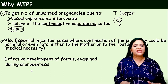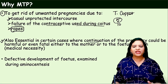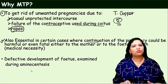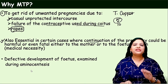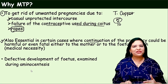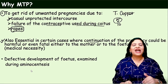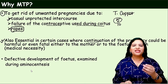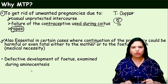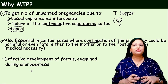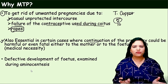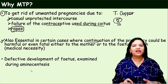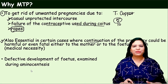MTP is also essential in certain cases where continuation of the pregnancy would be harmful to the mother or fetus. Suppose a couple wants a baby, the woman gets pregnant, and during monthly checkup scanning the doctor found the baby has some issues — not grown well, the baby is hydrocephalus, brain is not formed, some deformities, the extremities are not well formed. In such conditions, doctors advise the couple not to continue the pregnancy, because even if the baby is born it will not survive.